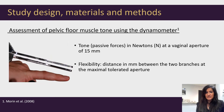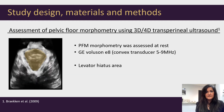Tone was measured with a dynamometric speculum at a vaginal aperture of 15 mm. Flexibility was assessed as the maximum tolerated vaginal aperture while separating the two speculum branches. Pelvic floor muscle morphometry was assessed using transperineal 3D-4D ultrasound and the levator hiatus area was measured at rest.